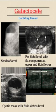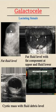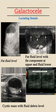Galactocele is another entity to remember when dealing with a breast cyst. It occurs in lactating females and has a characteristic fat-fluid level. On ultrasound, fat is above and fluid is below, because fat always floats on water. It can also have a fluid-debris level or a complex appearance. These are the most common appearances of galactoceles.